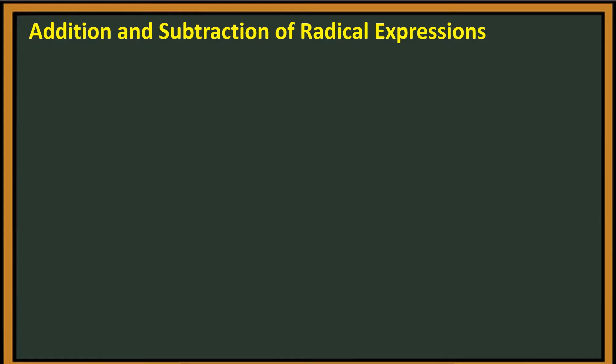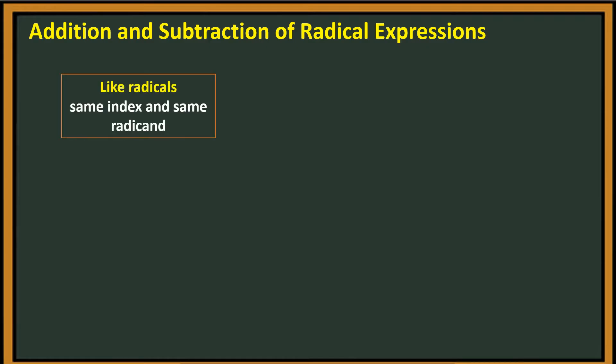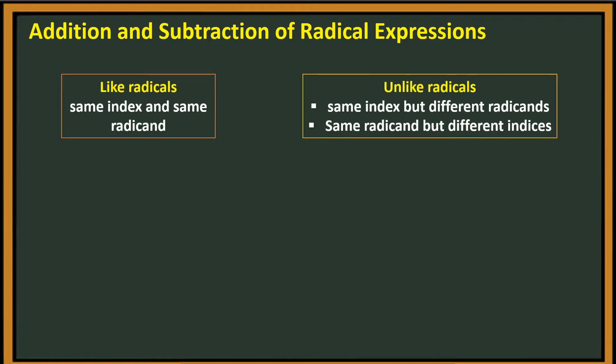In addition and subtraction of radical expressions, we should categorize them as like radicals or unlike radicals. Like radicals have the same index and same radicand. Unlike radicals have the same index but different radicands, or the same radicand but different indices.